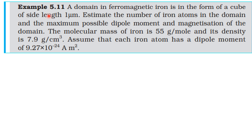One domain has a volume in cube shape with side length 1 micrometer. The molecular mass is 55 grams per mole, meaning 55 grams of iron corresponds to one mole of iron atoms. The density is 7.9 grams per centimeter cube, and each iron atom magnetic moment is 9.27 × 10⁻²⁴ ampere meter squared.